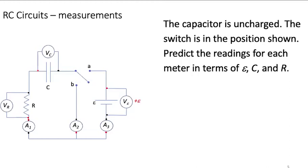Let's look at the voltmeter across the battery first. It's displaying the battery's EMF, which is also its terminal voltage in this case because we're using an ideal battery without any internal resistance, and whether current is flowing or not it's going to read positive epsilon — the positive value indicating that the red lead is near the positive terminal of this battery. All the other meters are going to read zero. There's no current in the circuit because it's an open circuit, so there's no current to charge the capacitor and make a potential difference across it, and no current to flow through the resistor.